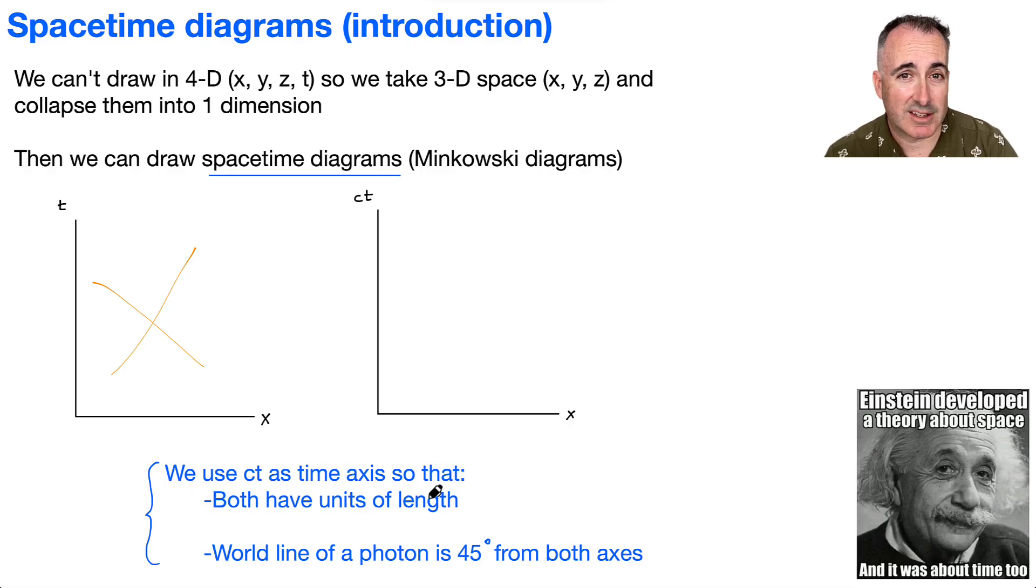But it turns out, first of all, we want things to both have the units of length. So let's just look at this. So ct, let's just look at its units here. So the units of c would be in meters per second, and the units of t would be in seconds. And, of course, what happens then? The seconds cancel out and you end up with just units of meters. So that has units of length. And then it turns out x, of course, will just have units of meters as well. So they're both actually the same.